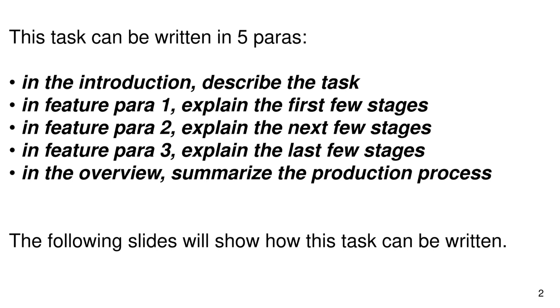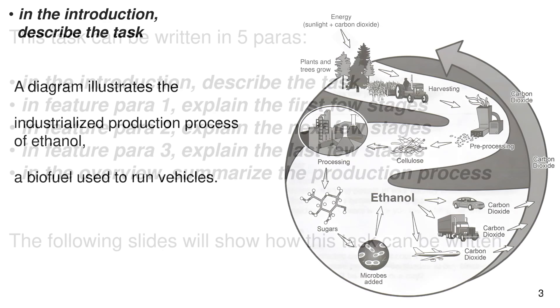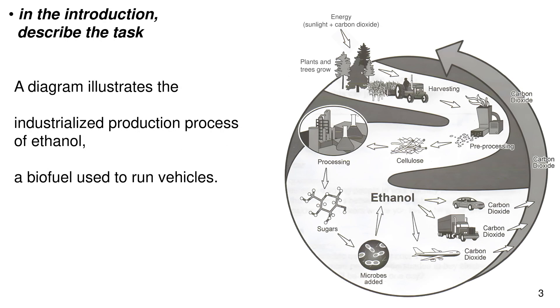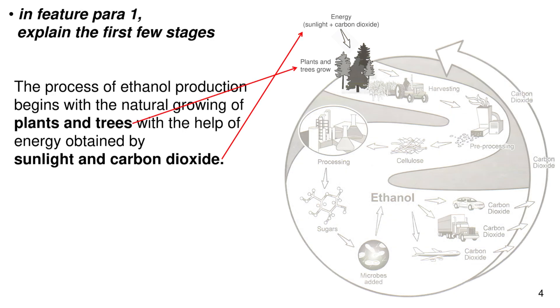The following slides will show how this task can be written. Now in the introduction, describe the task: A diagram illustrates the industrialized production process of ethanol, a biofuel used to run vehicles.